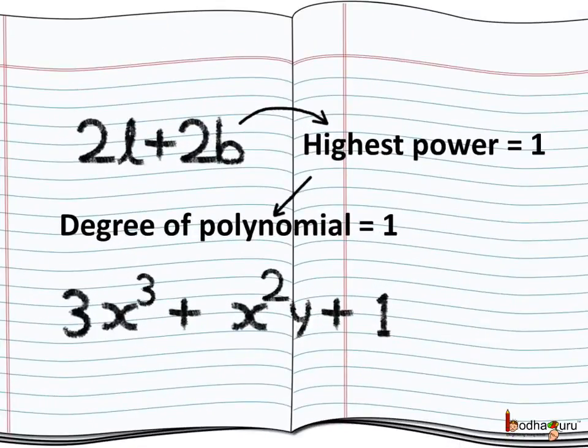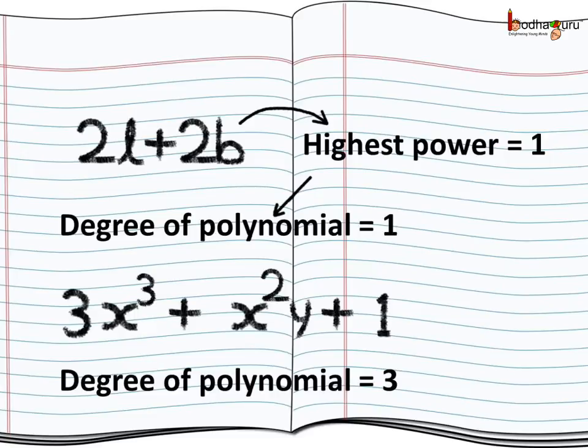Now, the term with the highest power in a polynomial decides the degree of the polynomial. What is degree? Take for example an expression 2l + 2b. Here the highest power is 1, as both l and b have 1 as the power, so the degree of this polynomial is 1. Next we have an expression 3x³ + x²y + 1. Here the highest power is 3, so the degree of the polynomial is 3.